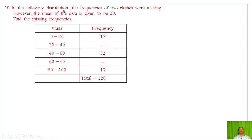Question Number 10: In the following distribution, the frequencies of two classes are missing. However, the mean of the data is given to be 50. Find the missing frequencies. The total frequency is 120.